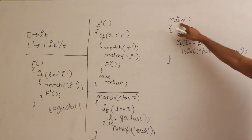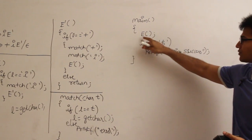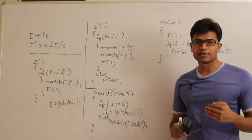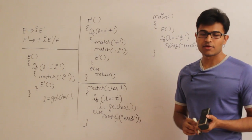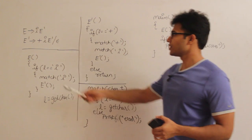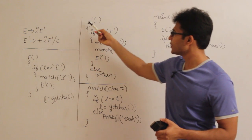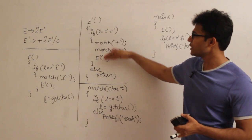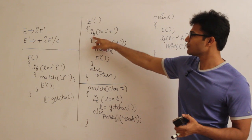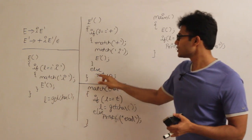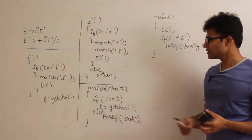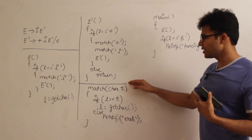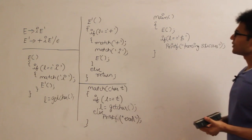The main function is supposed to call everything. Main starts with the initial variable E, and finally if the lookahead is dollar then we say successful. For any variable having more than one production, I will have more than one if-else case or switch case. The match function increments the pointer whenever the input matches the required symbol.